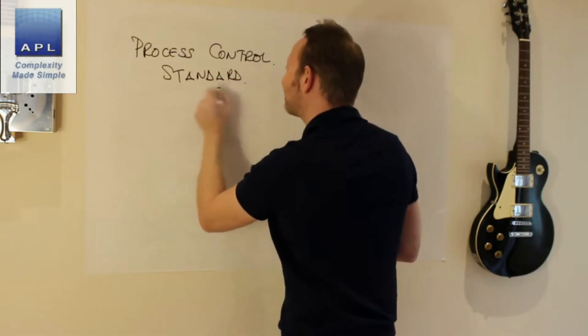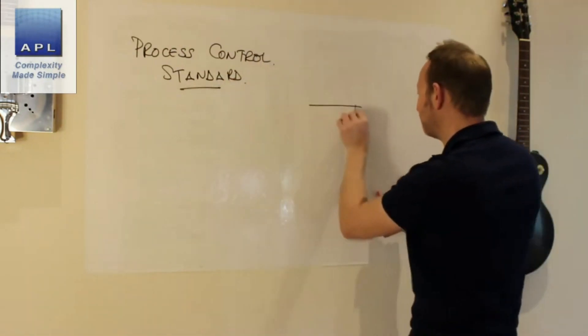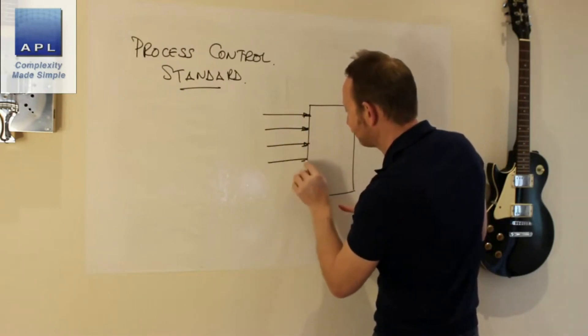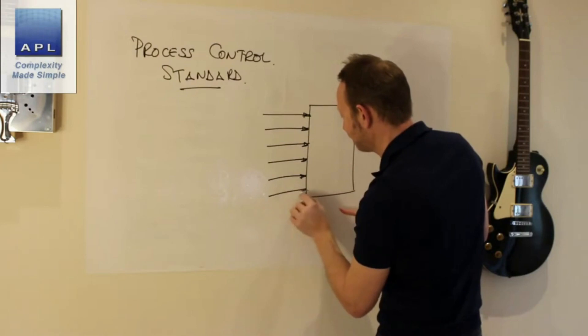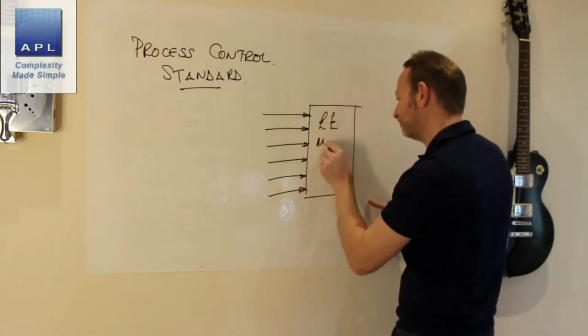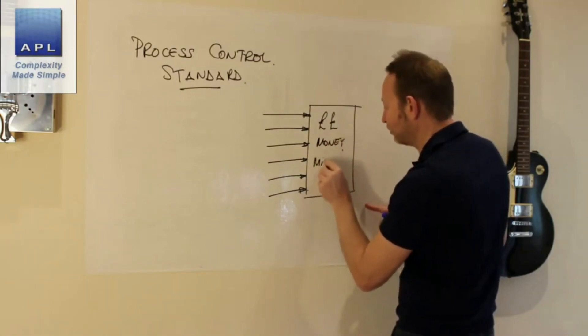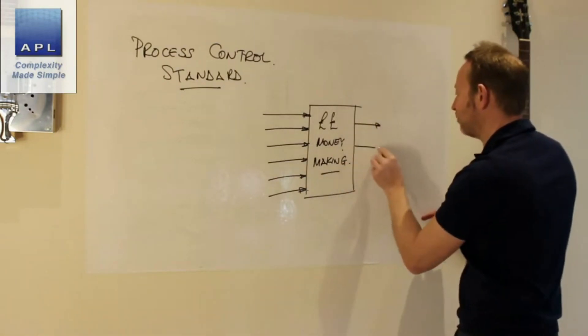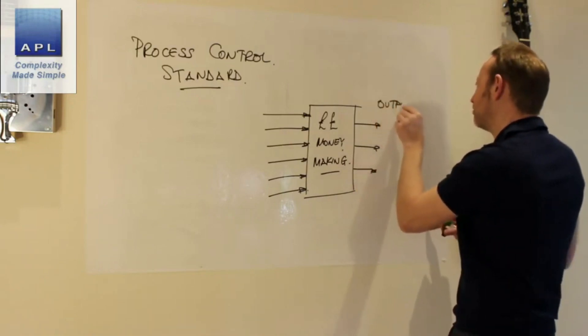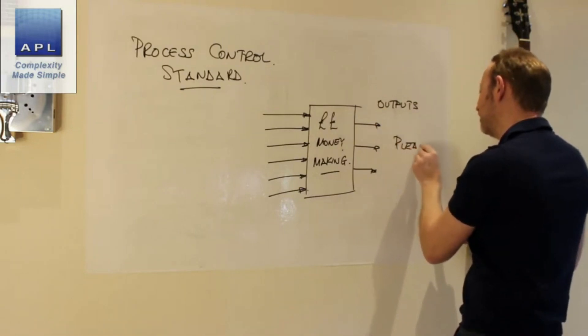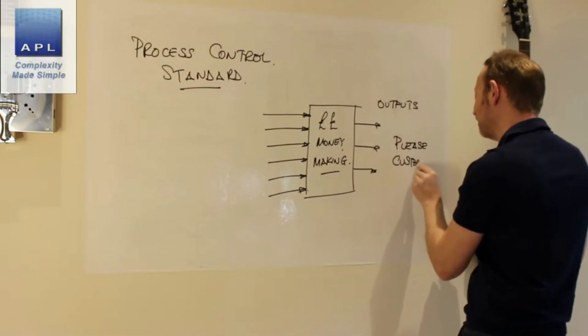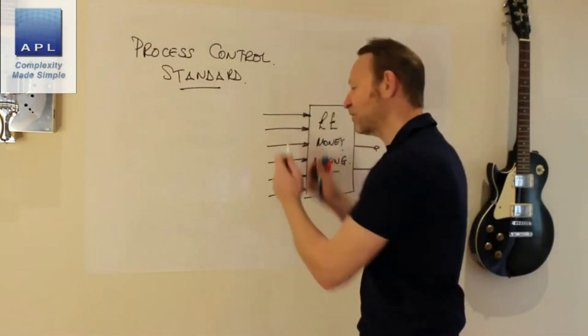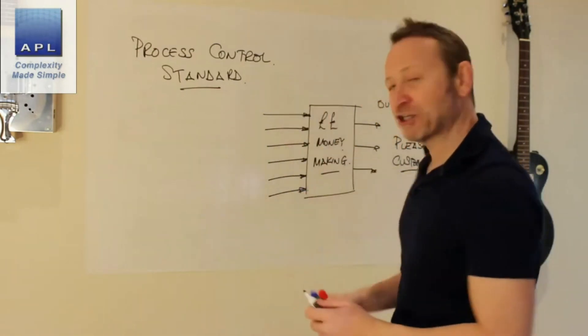Let's talk about getting a process under control first. Every process is the same. You've got a money-making process with inputs that you have to fix somewhere. How do we design great standards so that it's clear and not ambiguous? Obviously we've got some outputs over here. What are we trying to do with the outputs? We're always trying to please the customer. We're trying to put great controls in place so that they work really well.